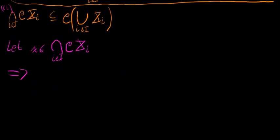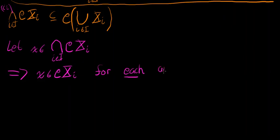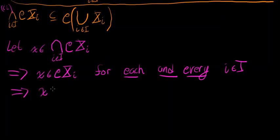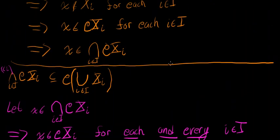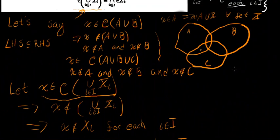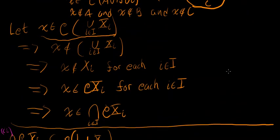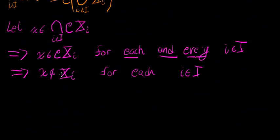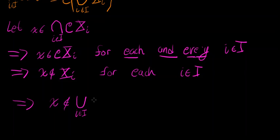So if x is in the complement of Xᵢ for each i in I, then by the definition of set complement, x is not in Xᵢ for each i in I. And we just talked about what criterion we need for an x to not be in the union of an indefinite number of sets — x can't be in any of the sets in that union. So if x is not in any Xᵢ for i in I, then x cannot possibly be in the union over all i in I of Xᵢ.